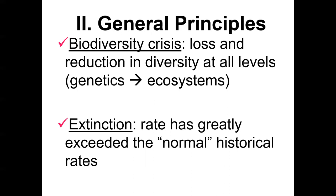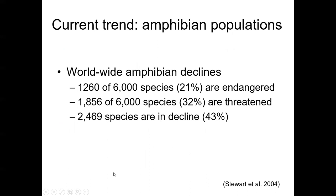This is a great concern because it could lead to cascading extinction events, where the loss of one species causes the loss of multiple species. Let's look at some trends, starting with amphibian populations. Roughly 20% of our 6,000 species of amphibians are currently endangered. 30% are threatened, and 43% are noticeably in decline. We certainly know that amphibian populations are struggling in today's environment.